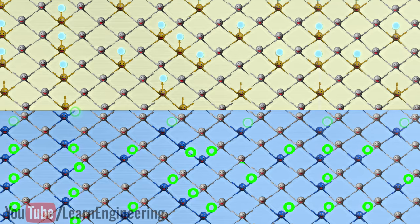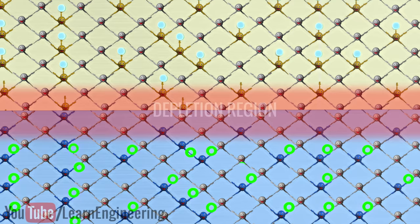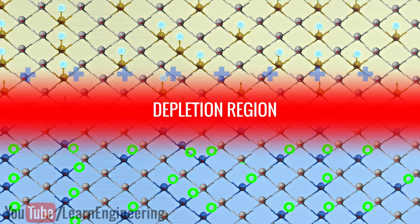This way, a depletion region is formed, where there are no free electrons and holes. Due to the electron migration, the N-side boundary becomes slightly positively charged, and the P-side becomes negatively charged.